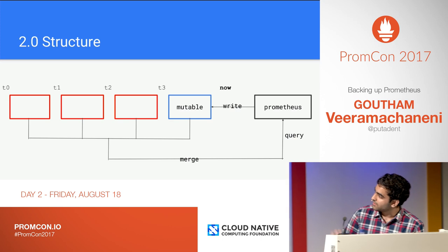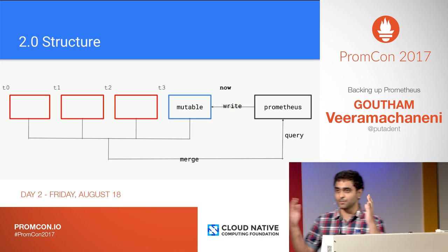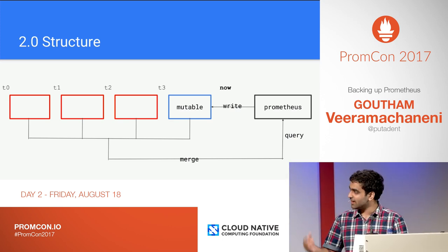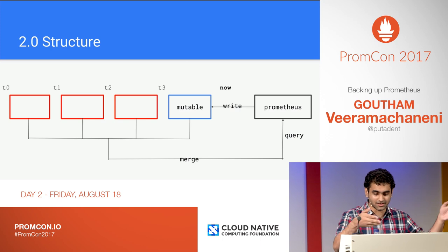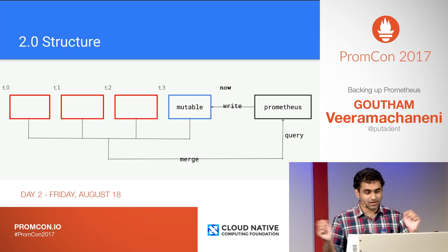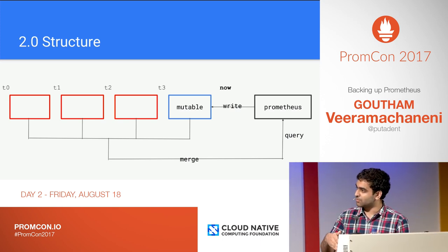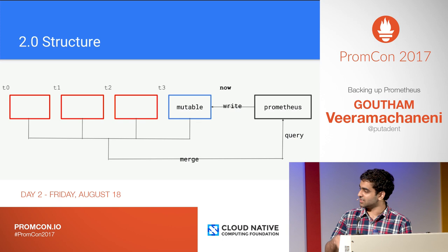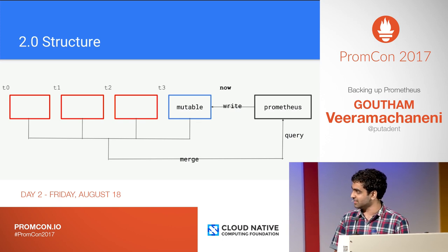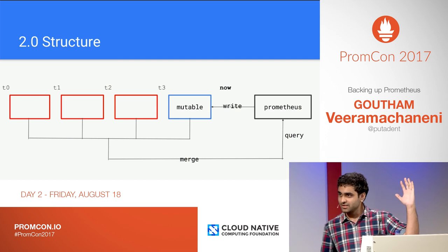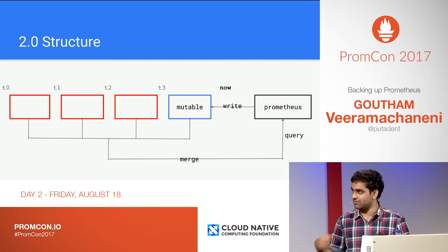Quick Prometheus 2.0 structure overview: we have a mutable block that we write to in memory, and then we have all these persistent blocks. The good thing about Prometheus 2.0 is the persistent blocks are not mutated a lot, which means backups are quite easy. In Prometheus 1.0 you're mutating millions of files, which means backups are kind of hard to do.